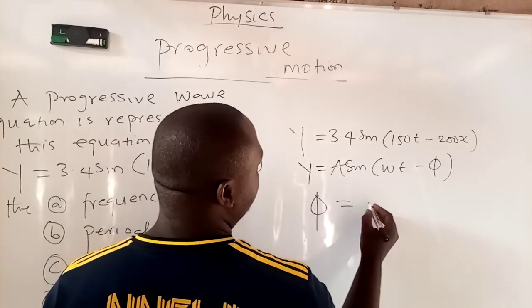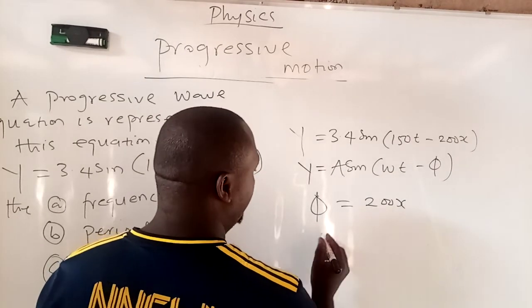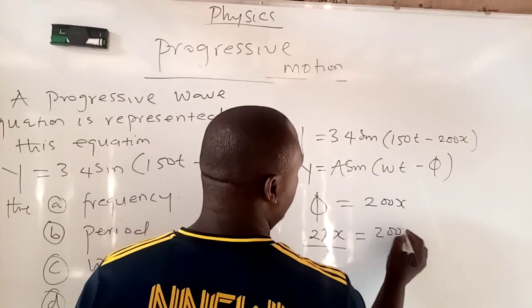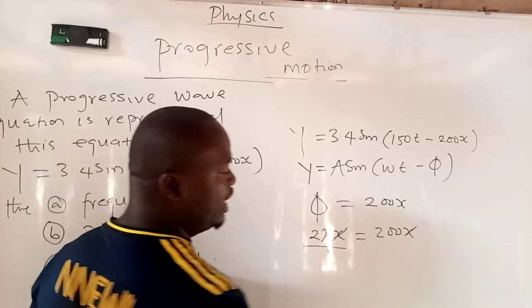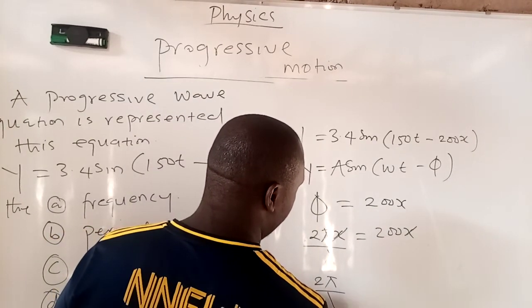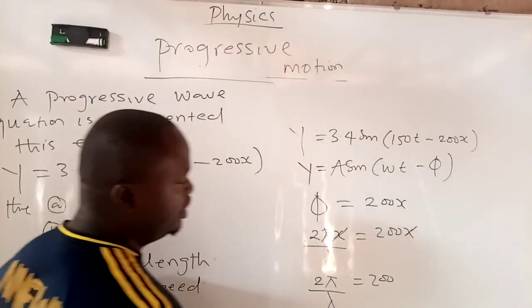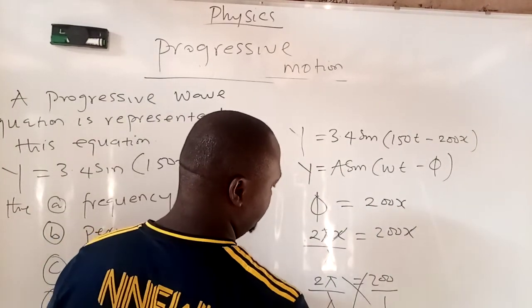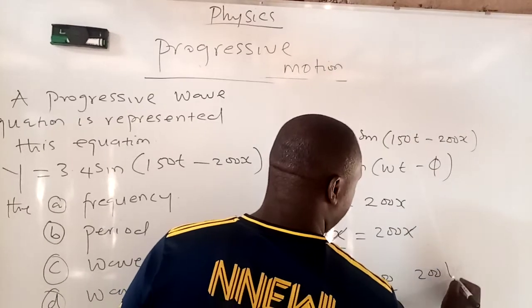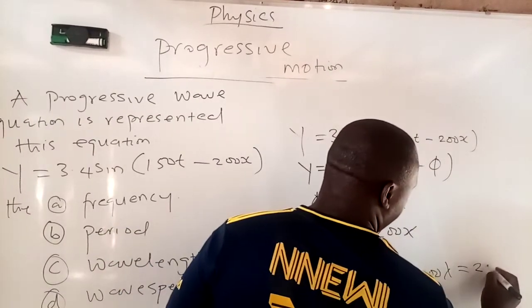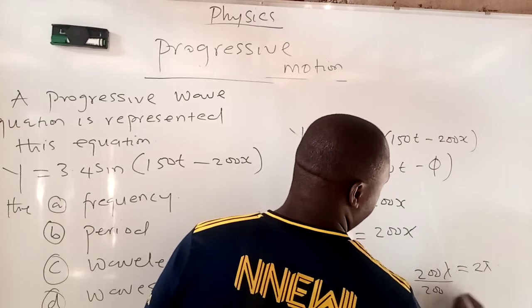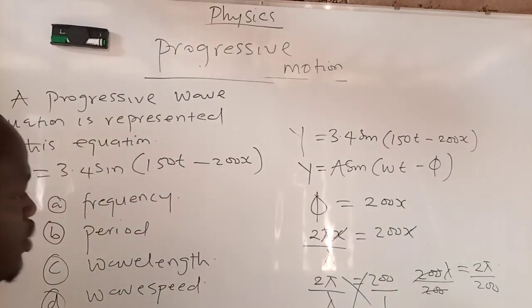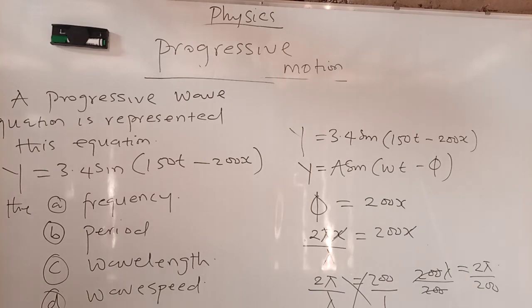The angular frequency is equal to 200x. Why? Because angular frequency, the formula is 2πx over lambda. So it's supposed to be 200x. X will cancel x. So you are left with 2π over lambda. This equals 200. They want us to calculate the wavelength. So this is over 1. You are cross-multiplying. So you have 200 lambda equals 2π. Dividing by 200, this cancel this, you are left with lambda.